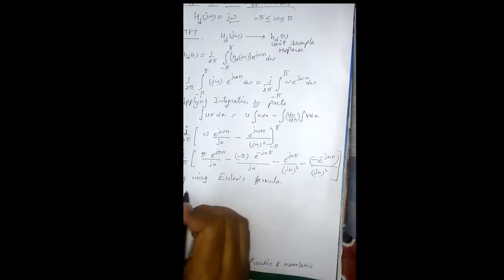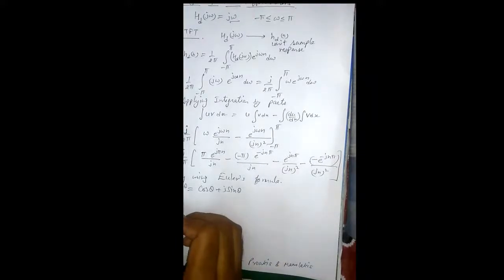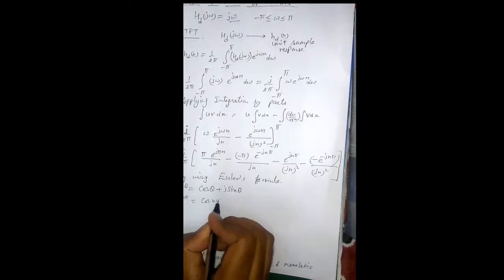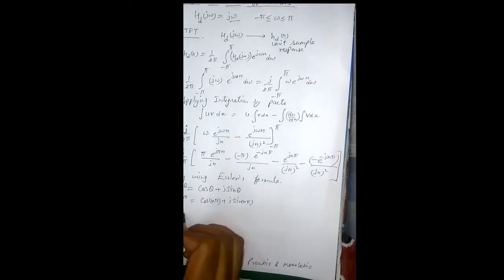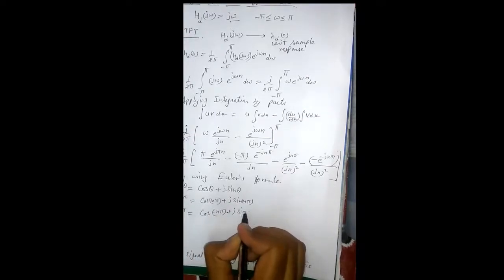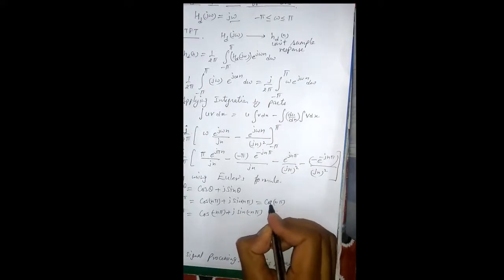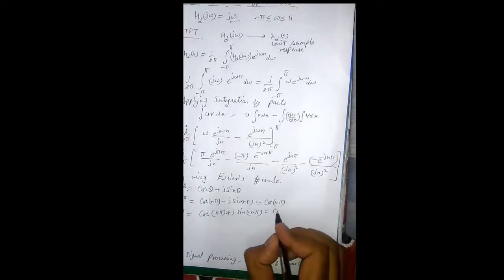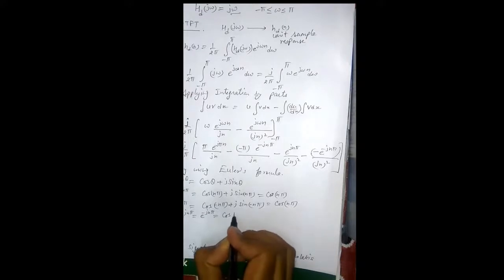Using Euler's formula, which states that e raised to power jθ equals cos θ plus j sin θ: e raised to power jnπ equals cos(nπ) plus j sin(nπ), and e raised to power minus jnπ equals cos(minus nπ) plus j sin(minus nπ). In both cases, sin(nπ) equals zero, and since cos(minus θ) equals cos θ, both expressions equal cos(nπ). So e raised to power jnπ equals e raised to power minus jnπ equals cos(nπ).